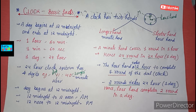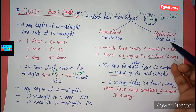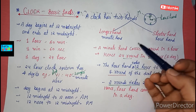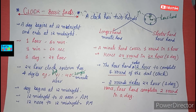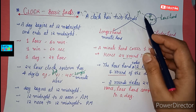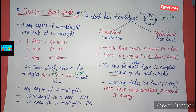So a clock has two hands — a minute hand and an hour hand. The minute hand is the longer hand and the hour hand is the shorter hand. So this is our hour hand, which is short, and this is our minute hand, which is long.